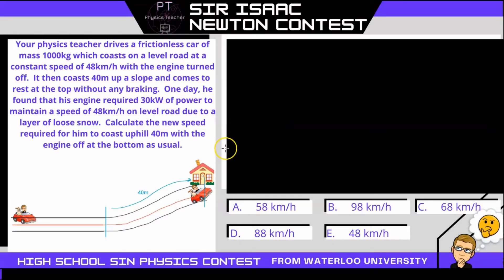In this question, your physics teacher drives a frictionless car of mass 1000 kilograms and then coasts on a level road at a speed of 48 kilometers an hour with the engine turned off.